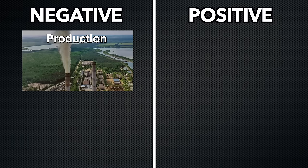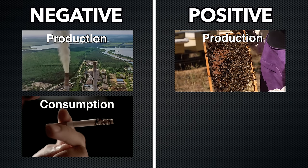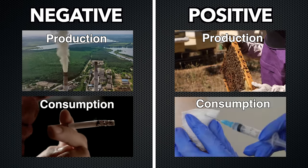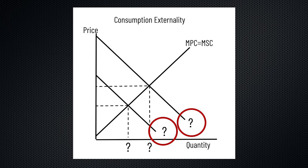A negative production externality, a negative consumption externality, a positive production externality, and a positive consumption externality. I have three rules that if you follow, you're going to get the right graph every single time. Rule number one: a production externality always has two cost curves — a marginal private cost and a marginal social cost. And this means a consumption externality always has two benefit curves — a marginal private benefit and a marginal social benefit.